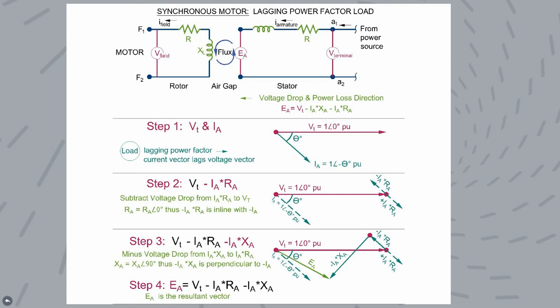In step two, there will be a voltage subtraction from the terminal voltage equal to the voltage drop through the resistive losses. Remember that the current in the equivalent circuit moves from right to left, it starts from the terminal and works its way to the motor.